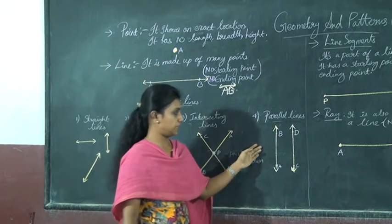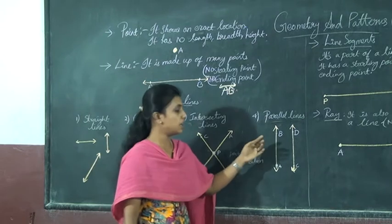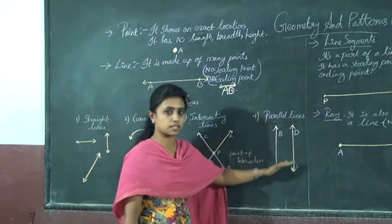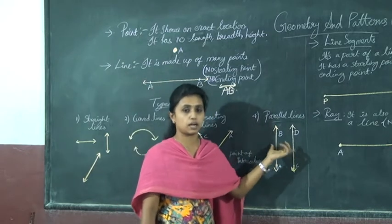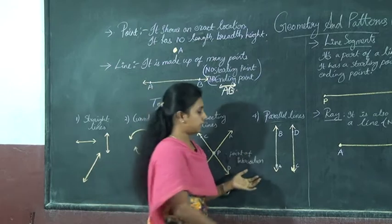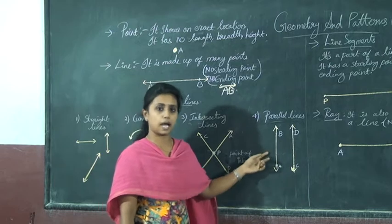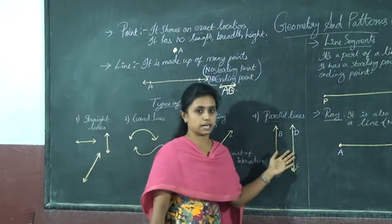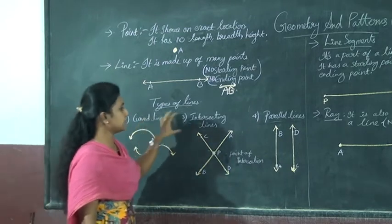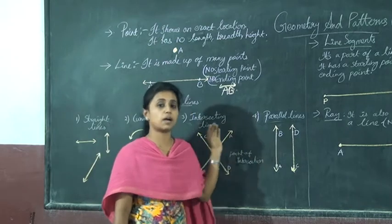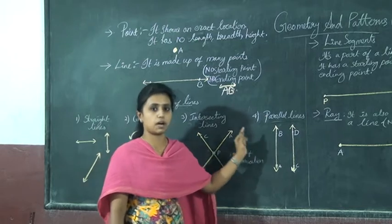Line CD and Line AB are intersecting lines — they meet or intersect at point P. Then comes parallel lines. Parallel lines, such as AB and CD, never meet.